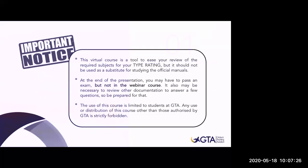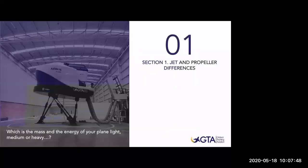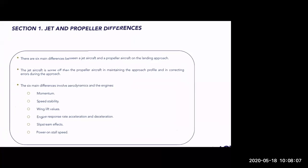If you are ready, let's get into the first part of the Jet Orientation Course — jet and propeller differences. What do you think is more challenging for pilots flying an approach? Between flying a jet airplane or a propeller airplane? In my opinion, flying a jet airplane is quite more challenging, and we'll see why, and what the main differences are during an approach profile. There are six main differences between a jet aircraft and a propeller during approach and landing.